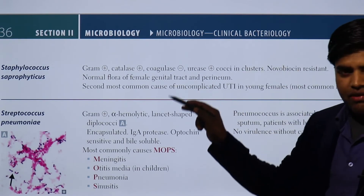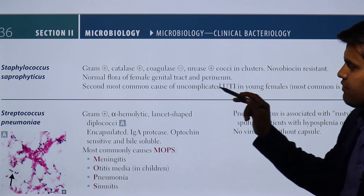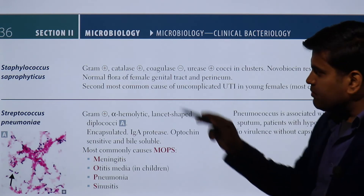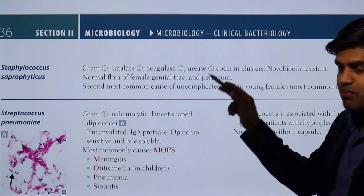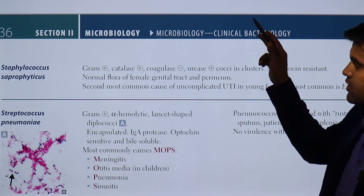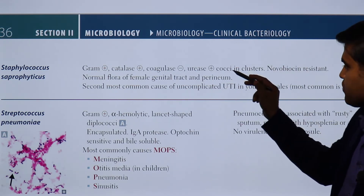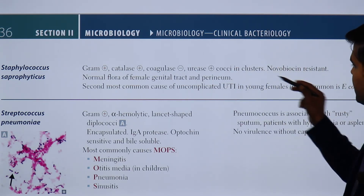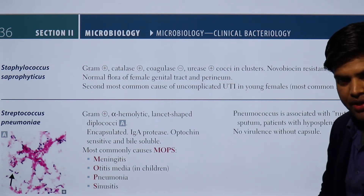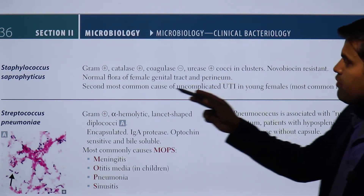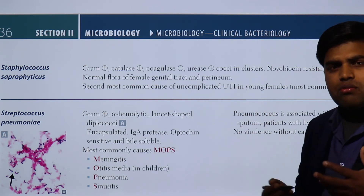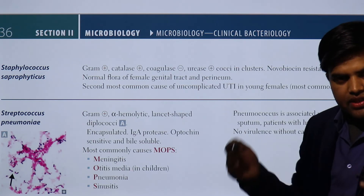Moving on to page 136, we continue with the staphylococcus organisms. We are talking about gram-positive, catalase positive, coagulase negative, urease positive organisms. Both Staphylococcus epidermidis and saprophyticus are urease positive, but they can be differentiated by the novobiocin test, which is resistant in the case of Staphylococcus saprophyticus.